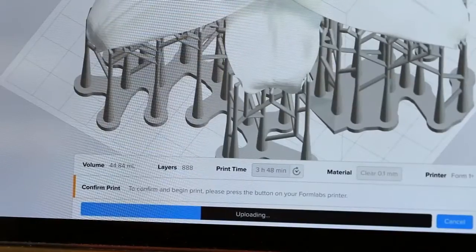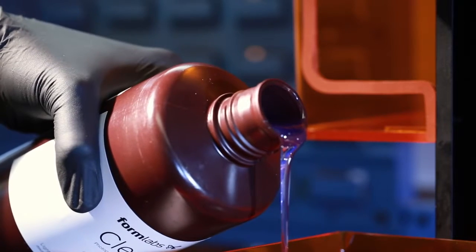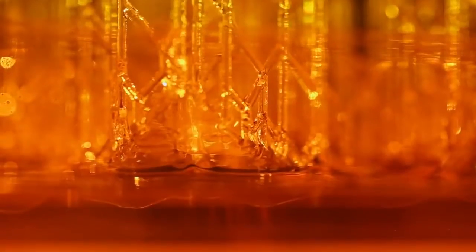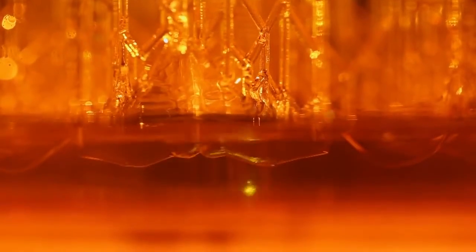To start a print we'll upload a file and fill up the resin tank to the indicator line. You can see the laser passing back and forth inside hardening the liquid plastic.